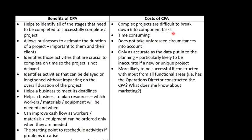However, complex projects can be difficult to break down into their component tasks. This can be very time consuming to do, particularly for complex projects. It doesn't take unforeseen circumstances into account, and it's only as accurate as the data that's going to be put into it — which is going to be particularly likely to be inaccurate if it's a new project or something you haven't done before. You need to make sure that it's constructed with people from all functional areas. For example, if the operations director constructed the critical path analysis, what does she know about the marketing elements and how long that will take?